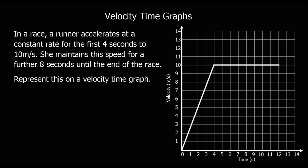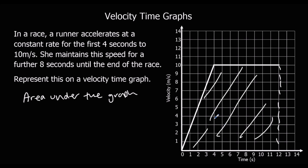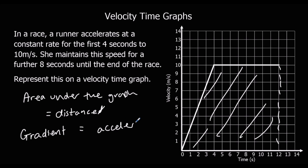What we need to know about velocity-time graphs: the area under the graph represents the distance travelled. And the gradient — how steep the line is — gives the acceleration. So there are two key things: area under is distance, and gradient is acceleration.